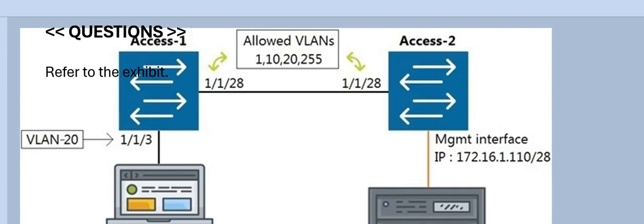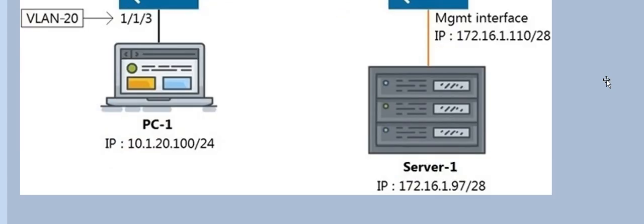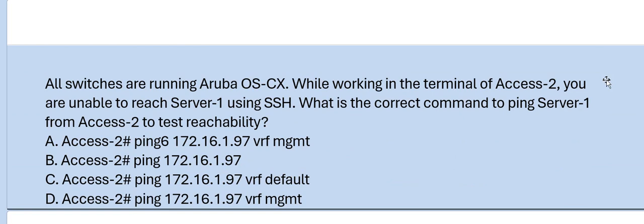Next question: Refer to the exhibit. All switches are running Aruba AOS-CX. While working in the terminal of XSA2, you are unable to reach Server 1 using SSH. What is the correct command to ping Server 1 from XSA2 to test reachability? Please have a look at the options. The correct answer is Option D.